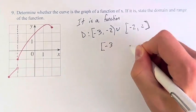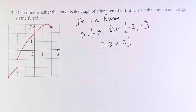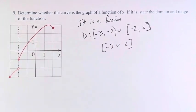So, the domain is negative 3 to 2, which makes sense. Any x value in this range, we can find a point on the function.